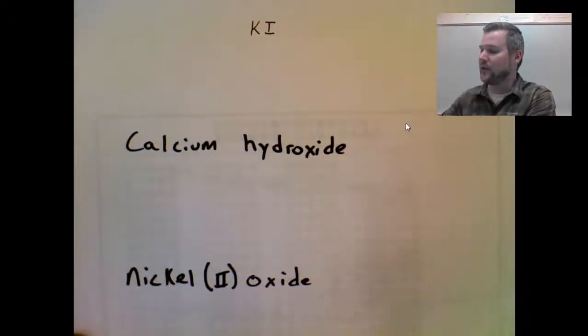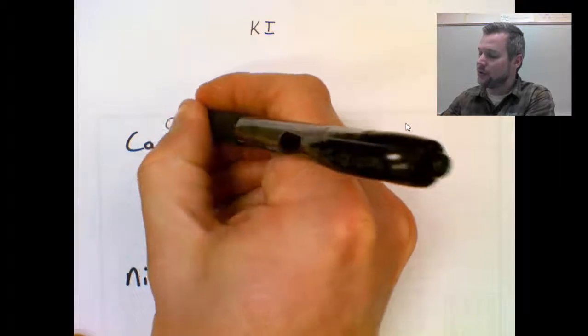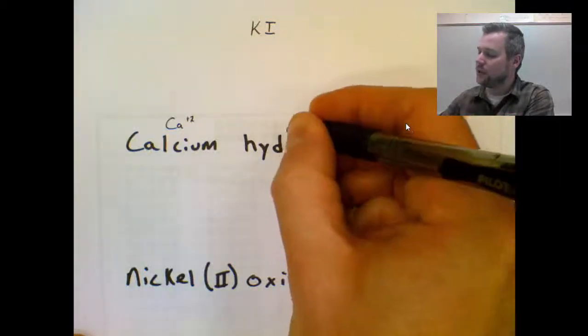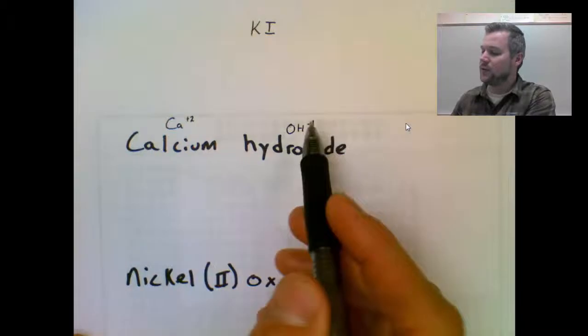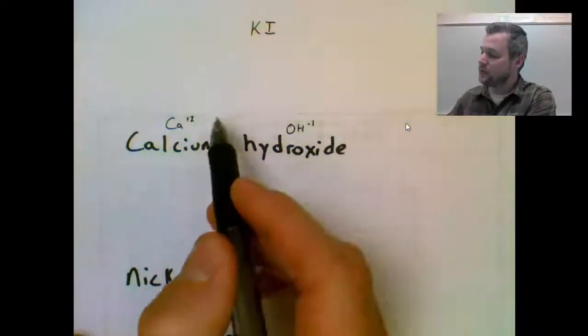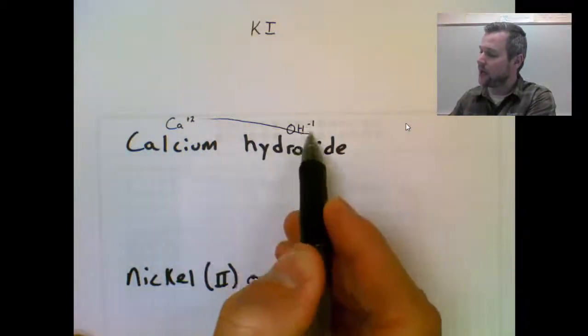Next formula, calcium hydroxide. Calcium is Ca plus two, hydroxide is OH minus one. Plus two, minus one don't cancel, so I need to crisscross.